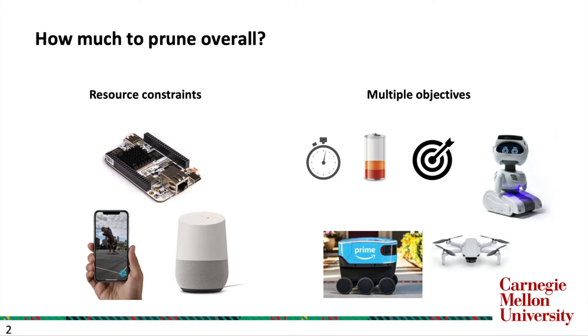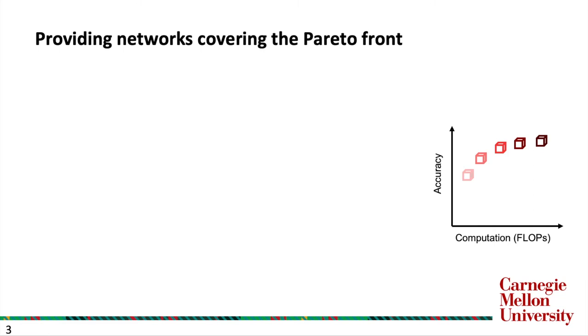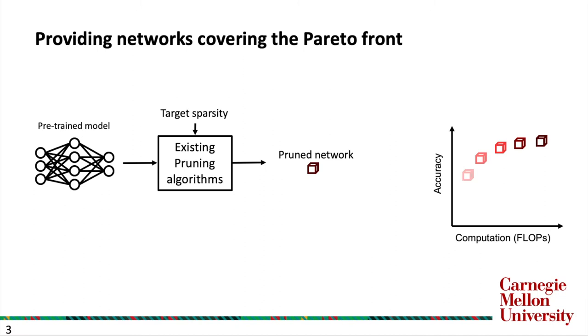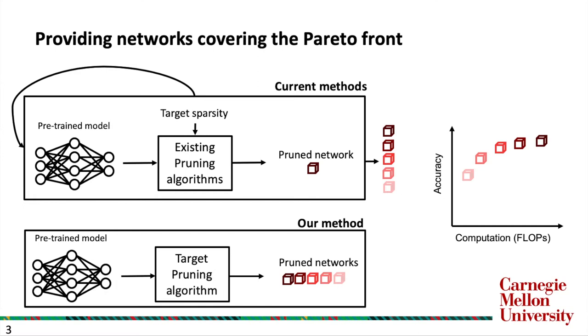As a result, we advocate developing filter pruning algorithms that provide pruned networks that cover the Pareto front. However, existing filter pruning algorithms are parameterized to search for pruned networks given a target constraint. Thus, to obtain the trade-off front using them requires running the costly algorithms iteratively. Our goal is to develop a filter pruning algorithm that can produce multiple pruned networks cheaply in one shot.